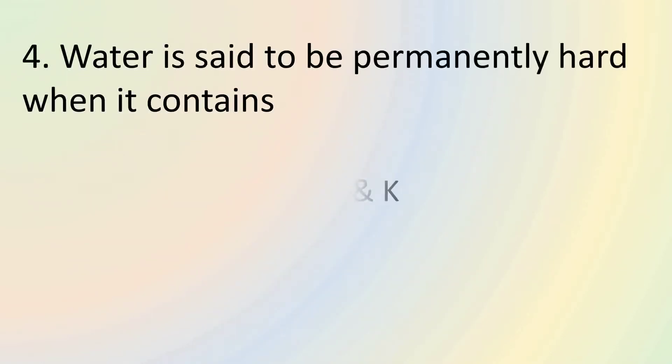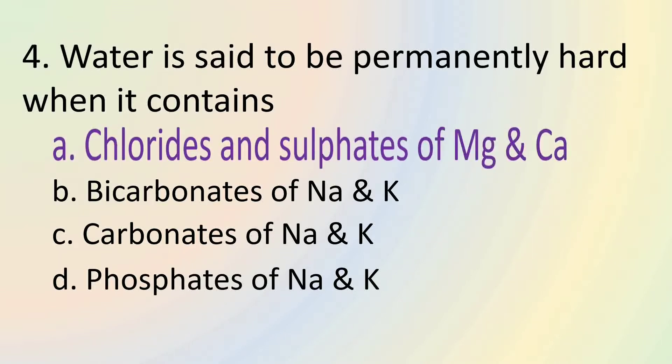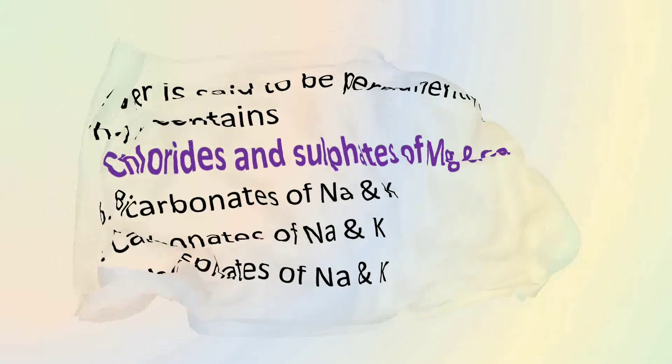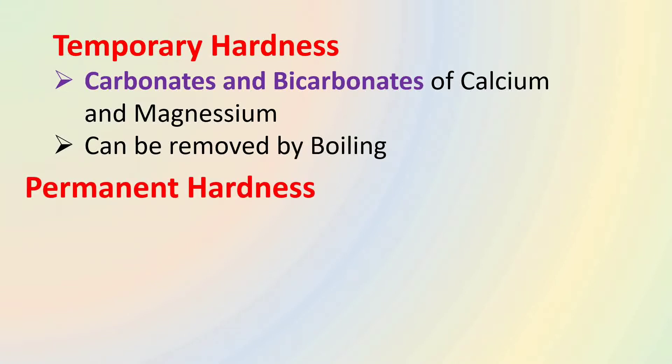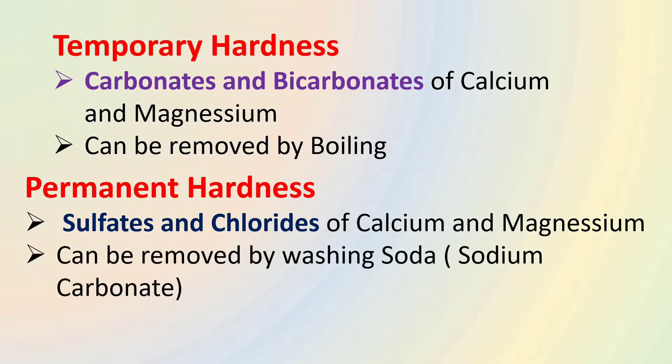Water is said to be permanently hard when it contains chlorides and sulfates of magnesium and calcium. It is said to be temporarily hard when it contains carbonates and bicarbonates of calcium and magnesium. Temporary hardness can be removed by boiling but permanent hardness cannot be removed by boiling. Permanent hardness can be removed by washing soda, sodium carbonate.